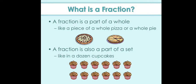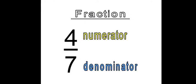A particular part of a thing is called fraction. Also, a fraction is a part of a set. Example, a dozen of cupcakes. Also, a fractional number will have two parts. The two parts are numerator and a denominator.